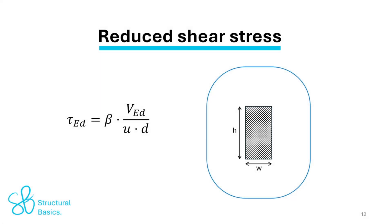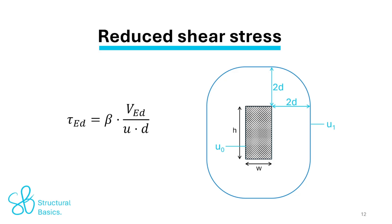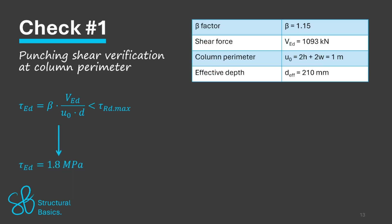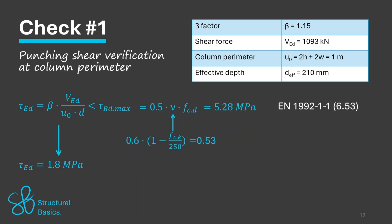The reduced shear stress is calculated as beta times shear force divided by u times the effective depth, where u is calculated as the perimeter of the column u0 for verification 1, and the perimeter of the column with a distance of 2d from all its edges for verification 2. The first check — verification of punching shear at the column perimeter — gives a shear stress of 1.8 MPa and a shear resistance of 5.28 MPa, resulting in a utilization of 34%. The first check verifies.